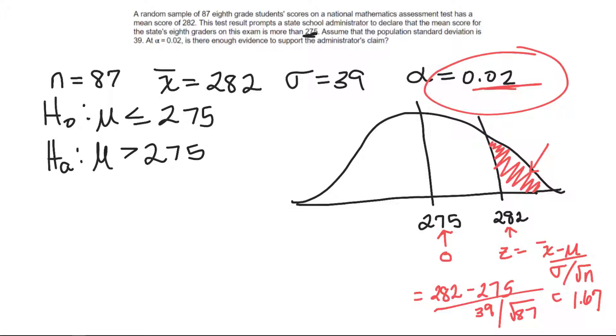Because if it is, then in that case, if I get a p-value greater than 0.02, then I'm going to reject the null hypothesis.